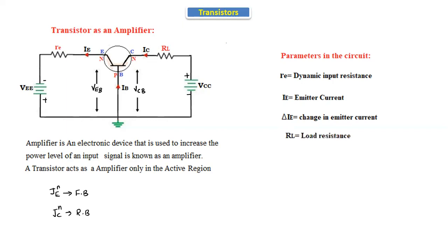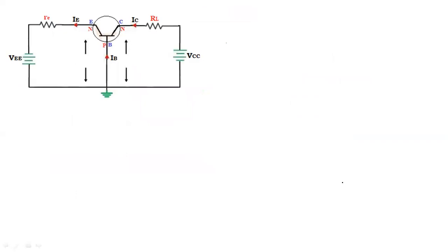RL is the load resistance connected to the output side. ic is the collector current — the current passing through the collector terminal. Delta ic is the change in collector current. We will now derive the input and output voltage equations and substitute them into the amplification factor formula.